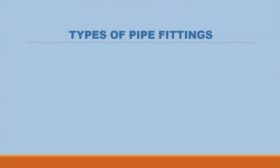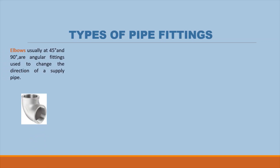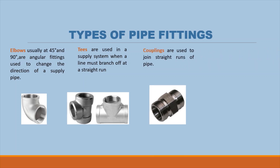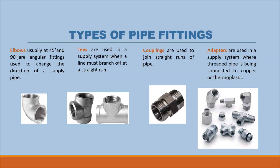Types of pipe fittings: elbows, usually at 45 degrees and 90 degrees, are angular fittings used to change the direction of a supply pipe. Tees are used in a supply system when a line must branch off at a straight run. Couplings are used to join straight runs of pipe. Adapters are used in a supply system where threaded pipe is being connected to copper or thermoplastic.